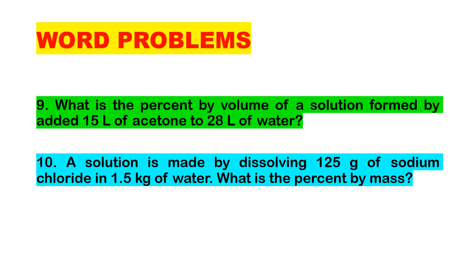Number nine: what is the percent by volume of a solution formed by adding 15 liters of acetone to 28 liters of water? Number ten: a solution is made by dissolving 125 grams of sodium chloride in 1.5 kilograms of water — what is the percent by mass?